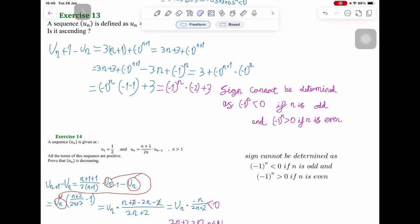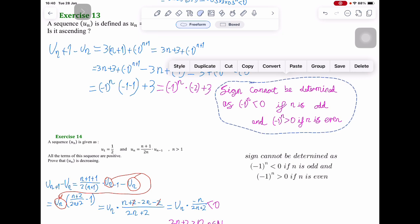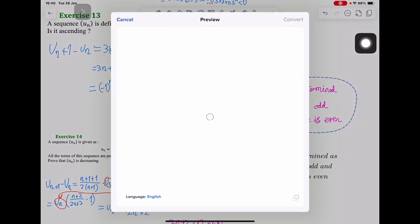Here, if I use my lasso and I try to convert this into, this time, not math but text, there will be mistakes. It will not be converted properly. So I cancel it.